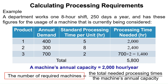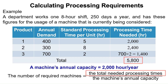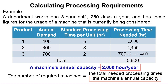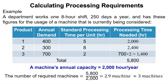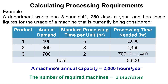Finally, to determine the number of required machines to fulfill the annually forecasted demand, divide the total needed processing times by the machine's annual capacity. This equals 5,800 divided by 2,000, which equals 2.9 machines, rounded up to 3 machines. Consequently, three of these machines would be needed to handle the required volume.